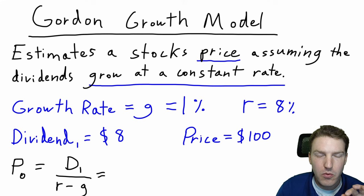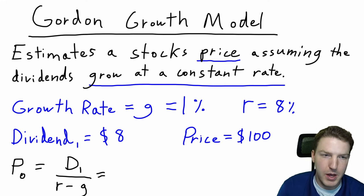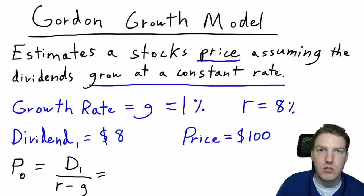Now let's just go over one last really popular variation of the dividend discount model. It's called the Gordon growth model. It estimates a stock's price, assuming the dividends grow at a constant rate.